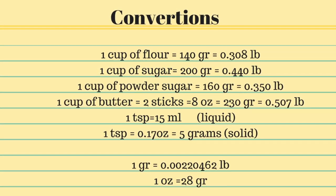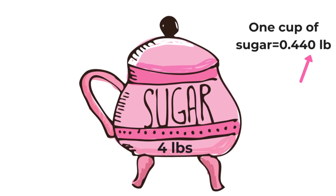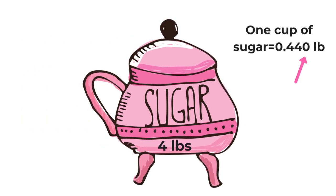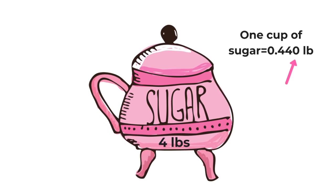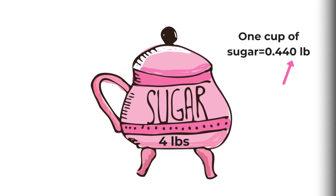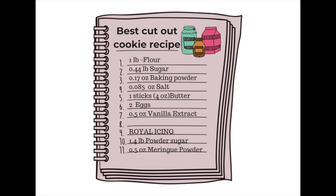In the conversion chart you can see that one cup of sugar equals 0.44 pounds. So if your recipe is calling for one cup of sugar, that's going to be 0.44 pounds. In this recipe, I make all the conversions to pounds, ounces, and pieces. Now we're going to go to an Excel program so you can calculate the price for any recipe that you have.